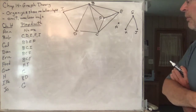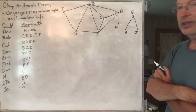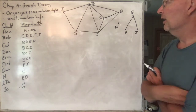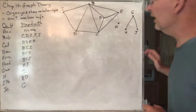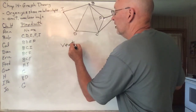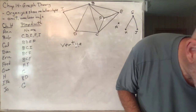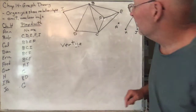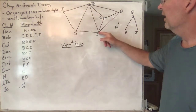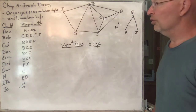Back to graph theory — let me throw some words at you. Chapter 14 has lots and lots of terms, but I'm going to keep them to a minimum. Each one of these corners is called a vertex, and the plural is vertices. Each one of the connecting lines is called an edge. Whoever came up with these chose pretty reasonable words.